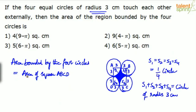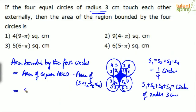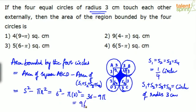To get the area bounded by the four circles: area of square ABCD minus area of (S1 + S2 + S3 + S4). We don't need to calculate individual sectors — together they form one complete circle. The side of the square is 3 plus 3 equals 6. So the answer is 6² minus π r² = 36 minus 9π. Taking 9 common, we get 9(4 minus π). Option two is the correct answer.